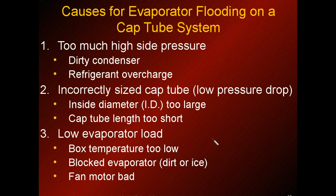If a cap tube system is flooding, here are some causes. When working on a cap tube system, avoid putting your gauges on if possible, because when you remove them you lose refrigerant, and there's so little refrigerant that it can affect the system quite a bit. If you have too high-side pressure, look for a dirty condenser or a possible refrigerant overcharge. An incorrectly sized cap tube is another cause, most likely if someone recently replaced it. Low evaporator load can result from a dirty or iced evaporator, bad fan motor, or very low box temperature.